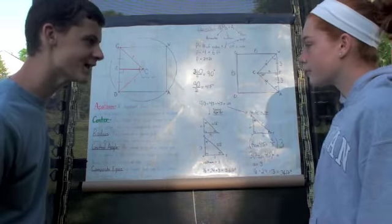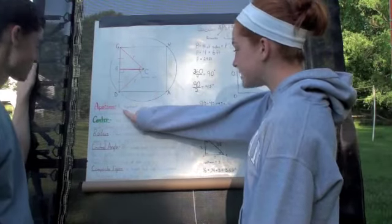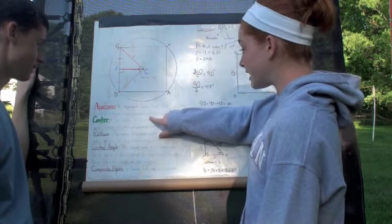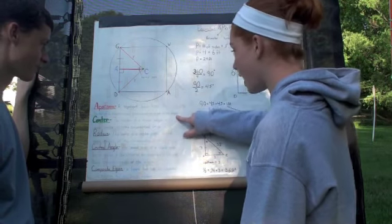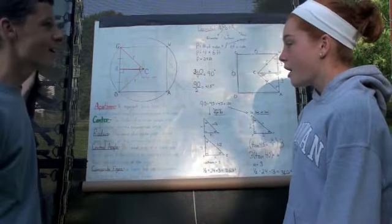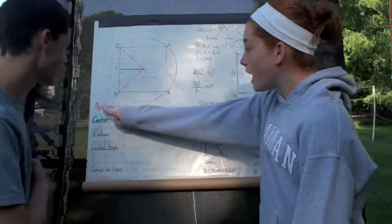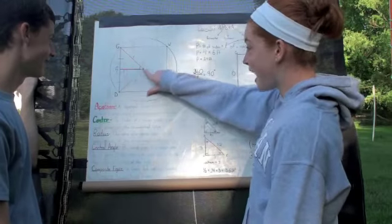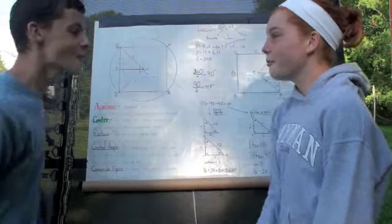Wow! But what's an apothem? Well, over here it says a segment drawn from the center of a regular polygon perpendicular to a side of the polygon! Wow! But what's the apothem? Well, it's written in red! So I'm going to guess that it's this red line right here!